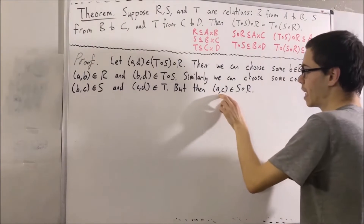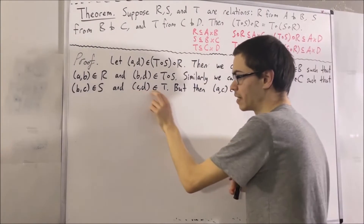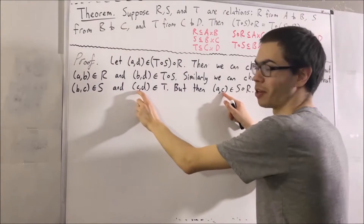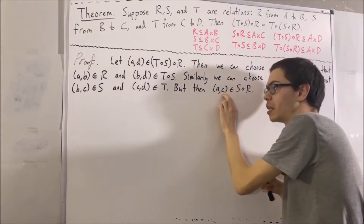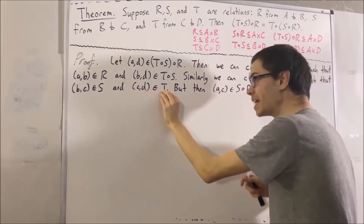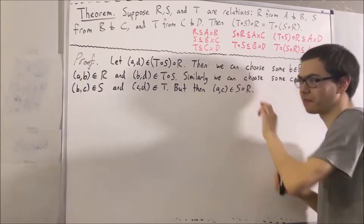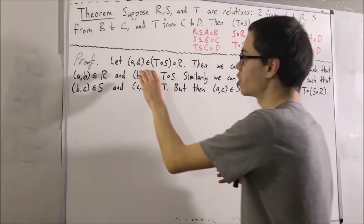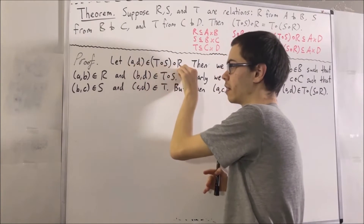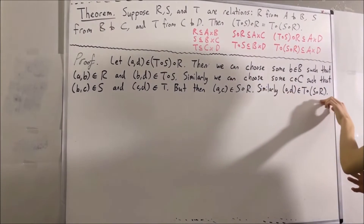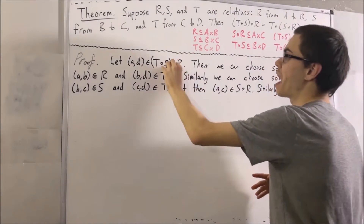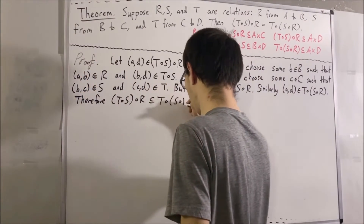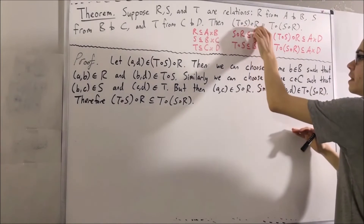Now we have that (a, c) is an element of s ∘ r and (c, d) is an element of t. So thinking of c as our intermediate element, (a, d) is an element of t ∘ (s ∘ r). We started with an arbitrary element (a, d) of the first set and showed that same element was also in the second set. Since it was arbitrary, everything in the first set is also in the second set.